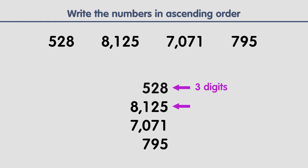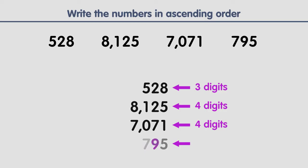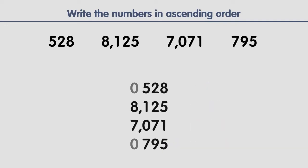This number has four digits, this one has four digits, and this one has three digits. We put zeros to the left of numbers with fewer digits. Now all the numbers have the same number of digits. Each digit position creates a column: first column, second column, third column, and fourth column.